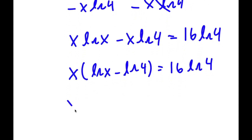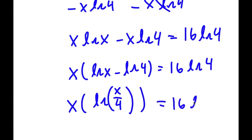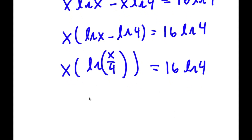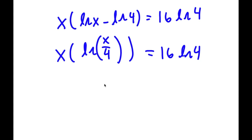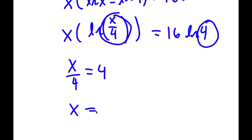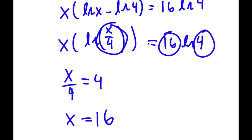Now ln x minus ln 4 is simply equal to ln of x over 4. So I have x times ln of x over 4 is equal to 16 times ln 4. This is essentially saying that x over 4 is equal to 4, so these two match up, meaning x is equal to 16.